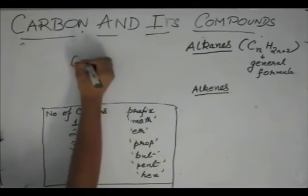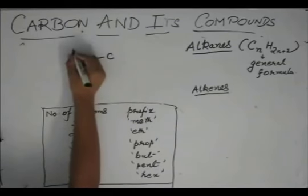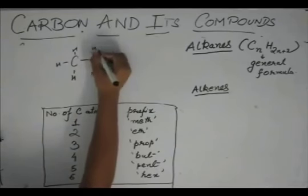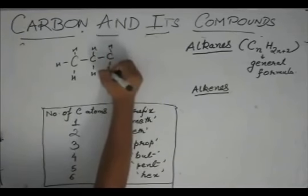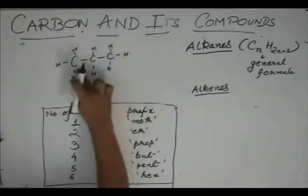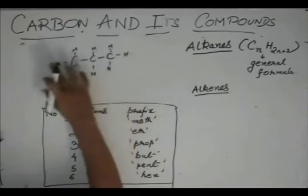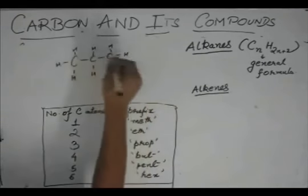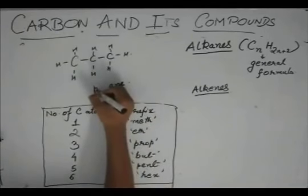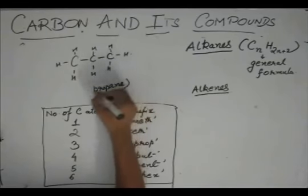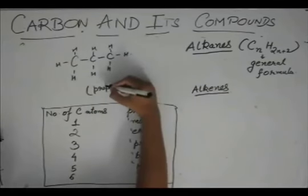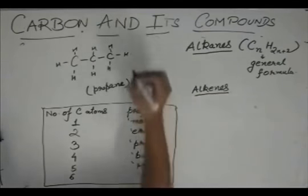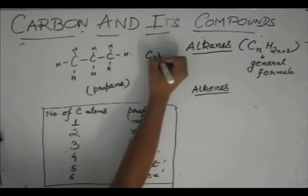We have seen that if this is an alkane, which is three carbon atoms with only single bonds, it's alkane, so ane, and three, so prop, so this is propane. The formula is C3H8.